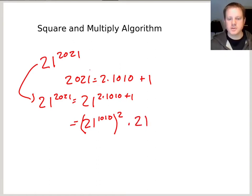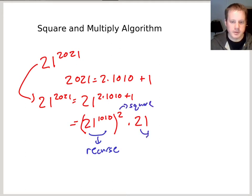So this is why it's called the square and multiply algorithm. Because what we have now is this 21 to the 1010. Now that's a recursive call on a smaller exponent. So this is a recursive call. And then here's our square, and then here's our multiply.